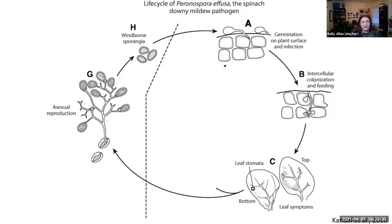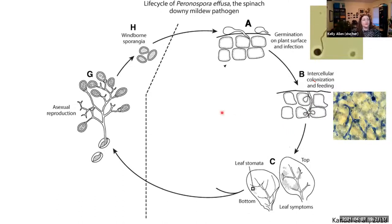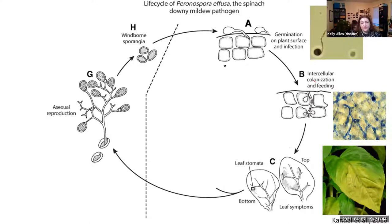The way the downy mildew pathogen infects the plant is very similar to the spinach downy mildew pathogen. The spores land on the plant surface and germinate. Once they germinate, they're able to punch through the plant tissue and feed in between the cells — this intercellular colonization creates these feeding structures. We cleared and stained some leaf tissue, and you can see the hyphal branching of this oomycete and the little circle-shaped structures, which are the feeding structures. As the pathogen continues to proliferate and colonize the plant tissue, it causes that chlorosis, which can become so extensive the whole leaf turns chlorotic.